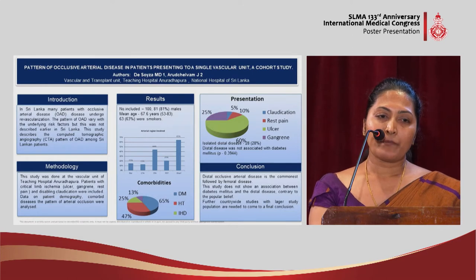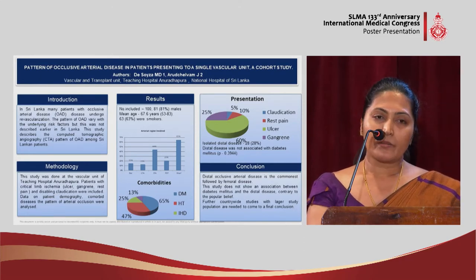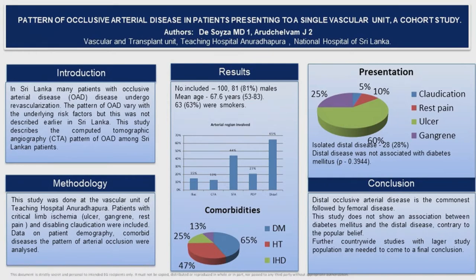We can see mostly the diabetic patients are also getting arterial occlusive disease. We found that the clinical presentation is critical limb ischemia and rest pain. Most of them presented with ulcers and gangrene. Those who needed vascular intervention were included in this study.